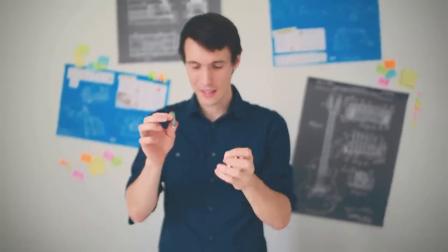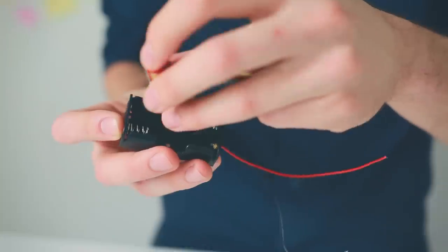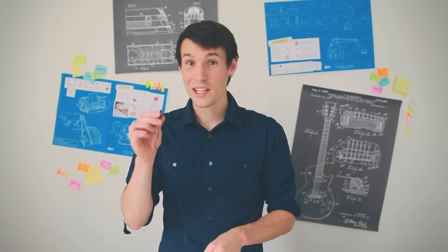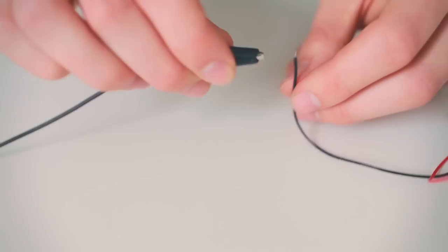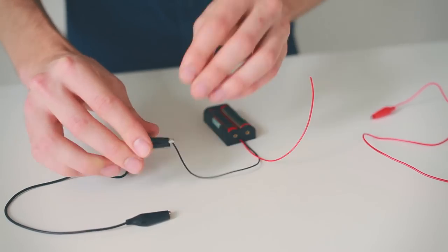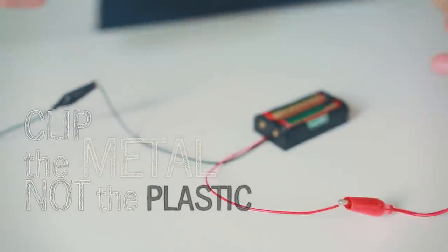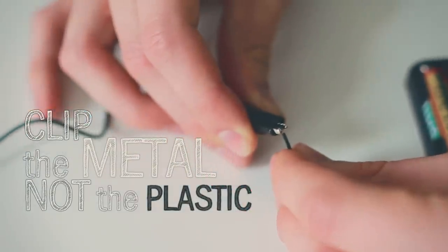First thing you want to do is take your AA batteries and put them in the battery pack. Now remember you want to put the flat or negative side against the spring. Next you want to take an alligator clip, clip it onto the battery pack leads. Then take your other alligator clip, clip it to the other lead. Make sure you're clipping onto the metal part, not the plastic.